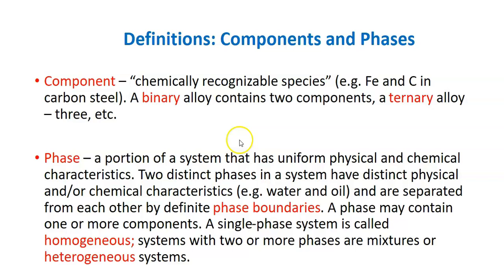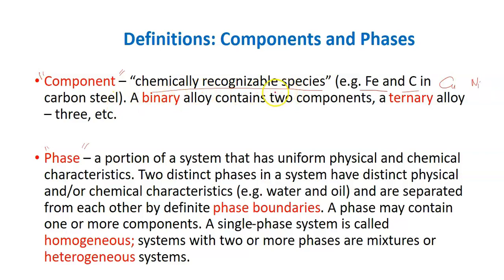Before we move on to the phase diagram itself, it is important to understand the definition of certain terms like component and phase. Component means a chemically recognizable species. For instance, we have iron, carbon, copper, or nickel — these are called components. A binary alloy is an alloy that contains two components; a ternary alloy contains three components.